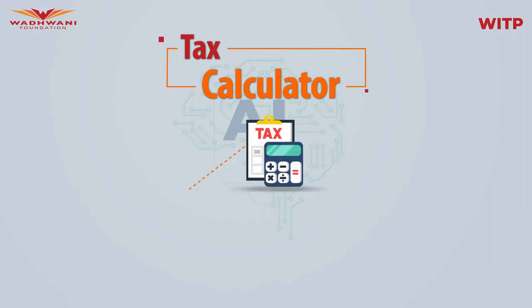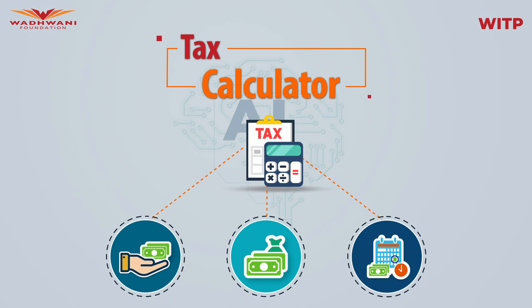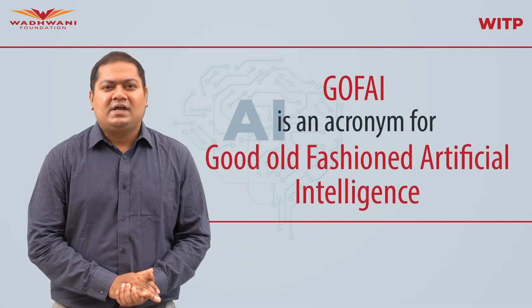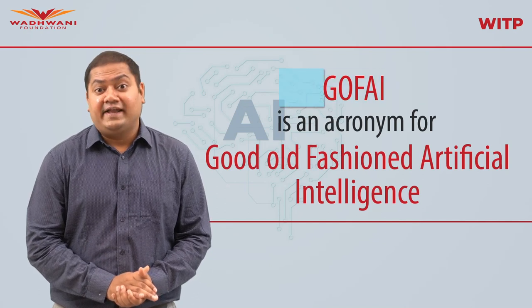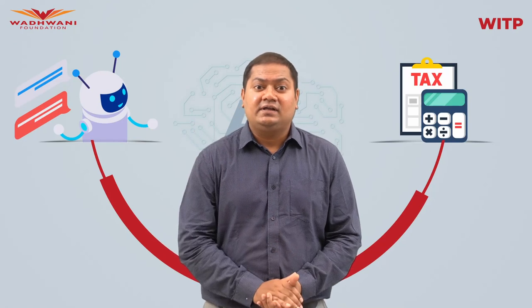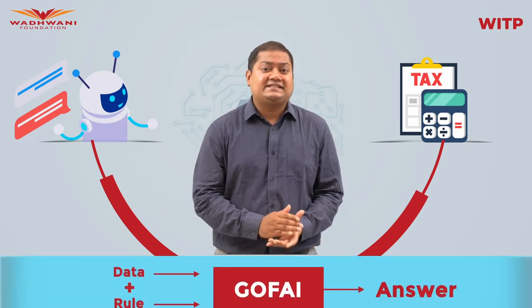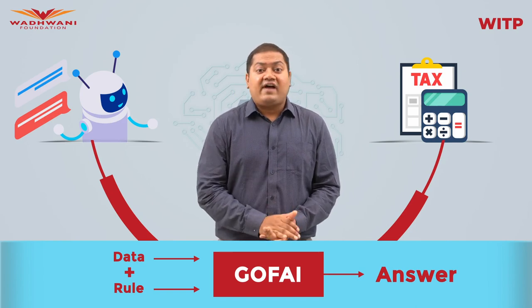Another example is a tax calculator. We feed in information regarding tax calculation — salary, investments, interests — and the tax calculator tells us how much we owe to the tax department. Again, this is a very specific rule-based system where the tax rules are clearly defined. These examples constitute what we call GOFAI — good old-fashioned AI — where the rules are hard-coded.